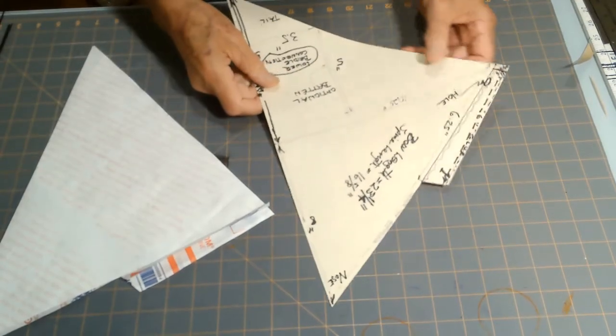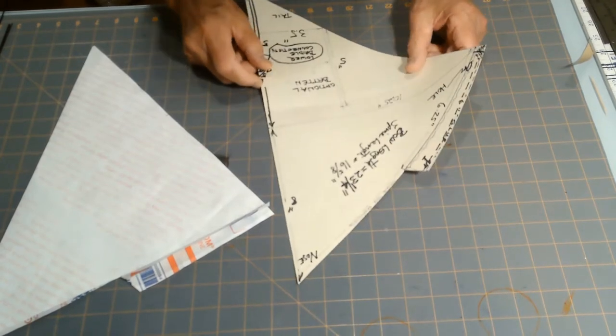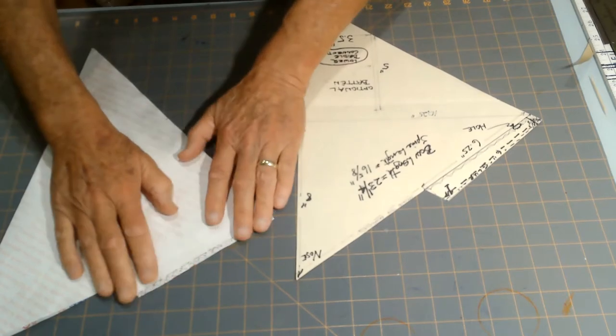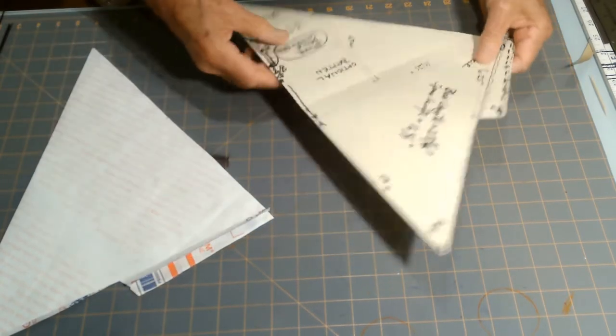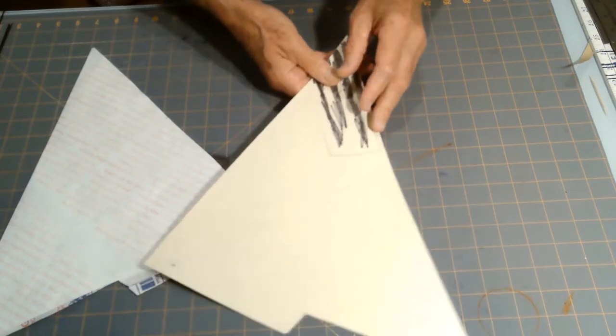There are a couple of different ways to cut out the sail for your kite. One of the ways that many kite makers use is to make a half template like this. This is just one half of the kite.